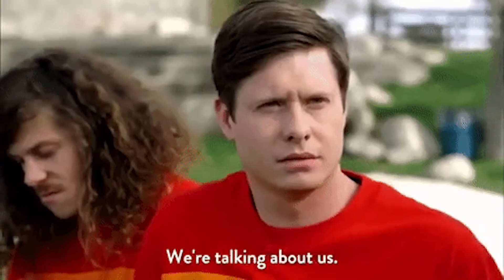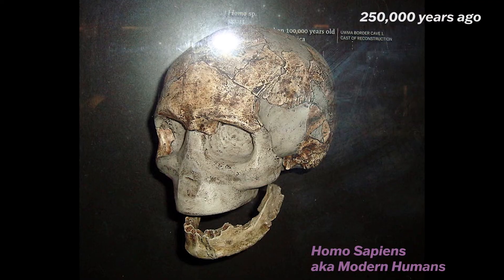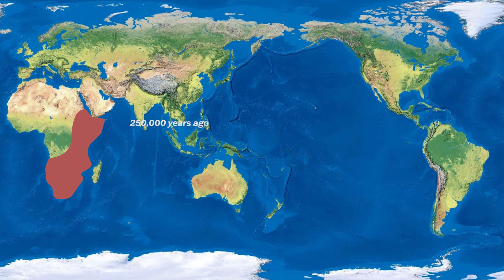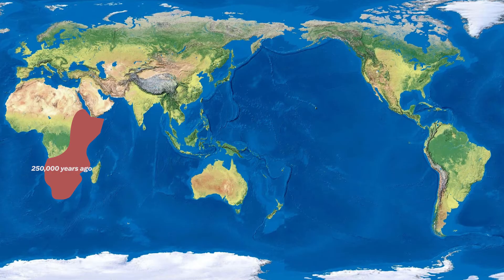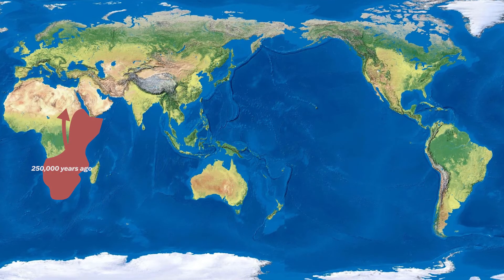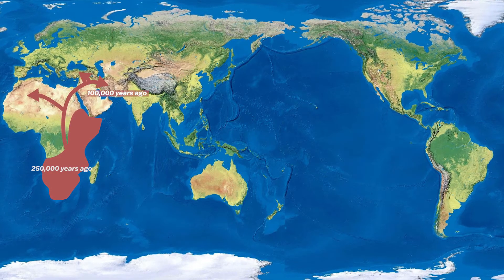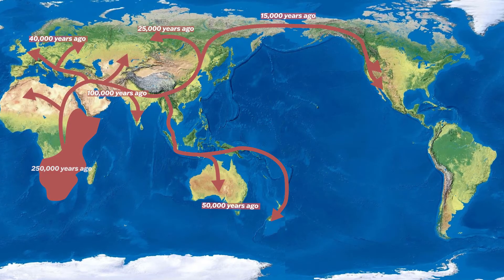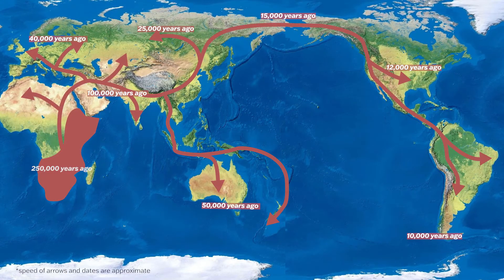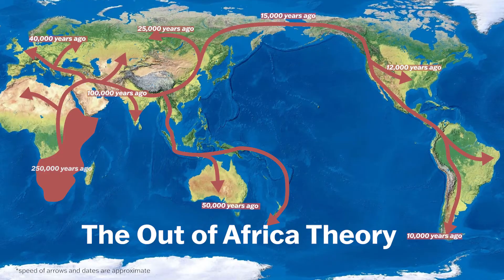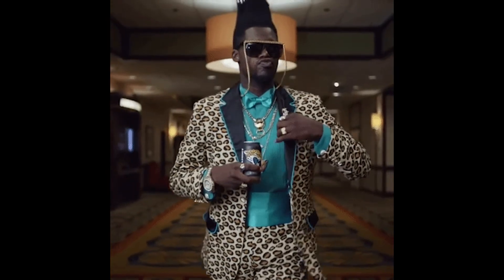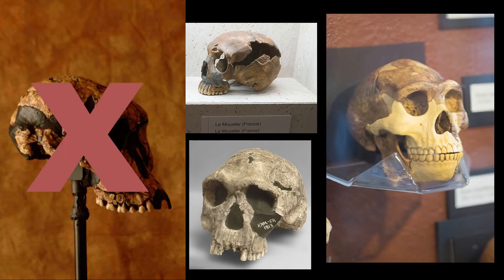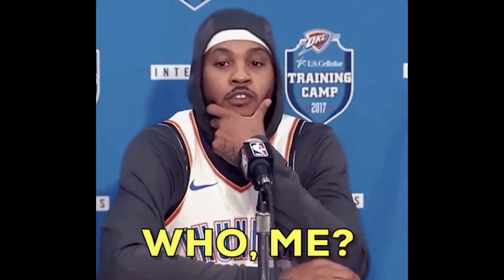But enough about other species — let's talk about us. The species modern humans are descended from, Homo sapiens, emerged in Africa about 250,000 years ago. They began migrating out of Africa about 100,000 years ago and expanded into Eurasia, Australia, the Americas, and Pacific Islands, which is known as the Out of Africa Theory. The other species of hominids eventually all died out — or maybe we had something to do with their disappearance. We're not entirely sure why Homo sapiens are the only human species left.